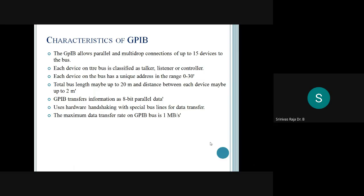The total bus length may be up to 20 meters. GPIB transfers information on 8-bit parallel data and uses hardware for handshaking with special bus lines. The maximum data transfer rate is up to 1 MB per second. This gives wide capacity to transmit and receive data, and to control devices remotely — from the PC you can transmit and receive data from devices using the GPIB interface and also control a remote device.